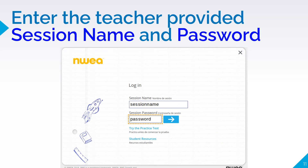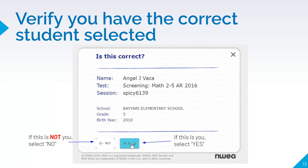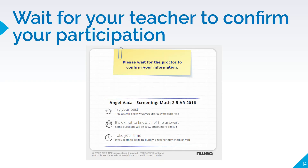When logging in, you will enter the session name into the session name field and the password, then click on the blue arrow. Select your student's name from the list of students in the session. Verify that you have selected the correct student. If you have not selected the correct student, select 'No' and that will take you back to select the correct student. If it is correct, select 'Yes.' After confirming, you will wait for your teacher to confirm your participation.